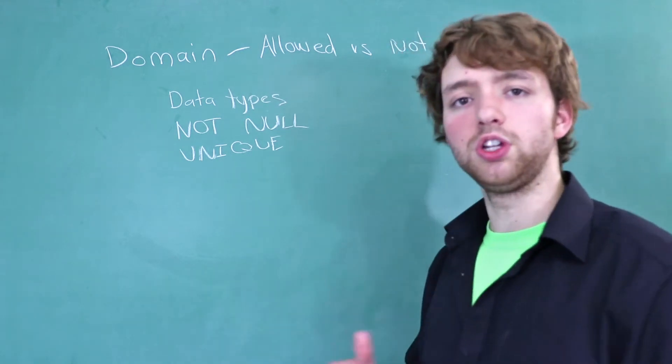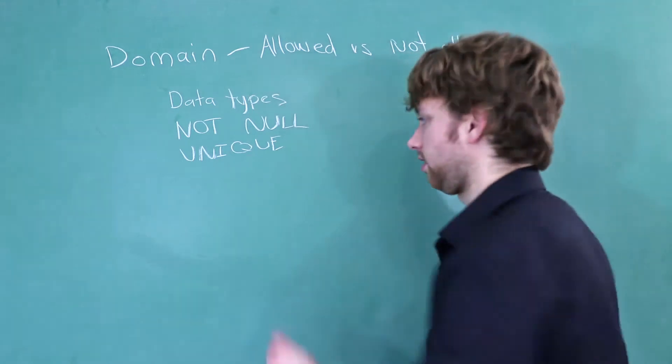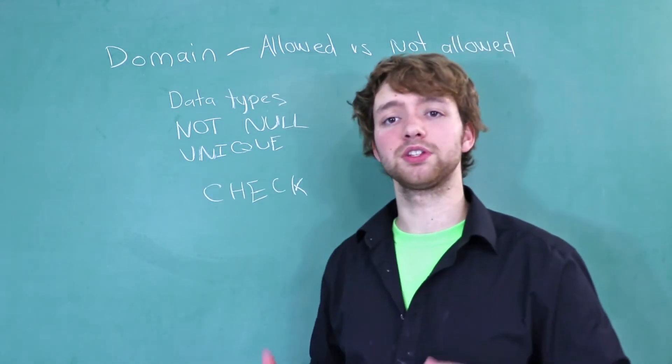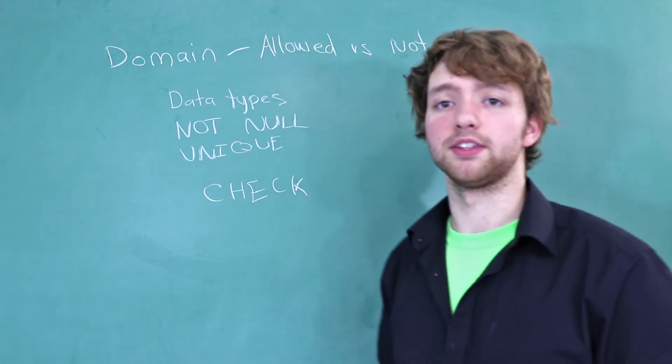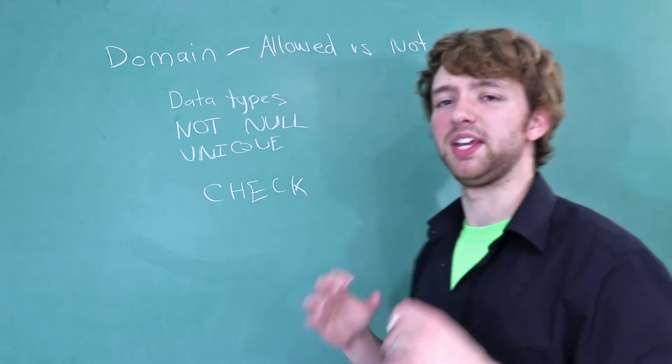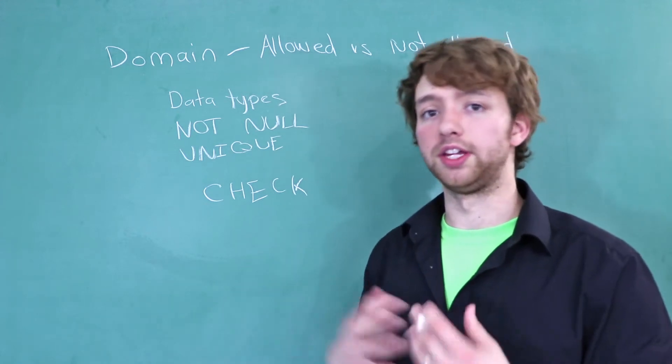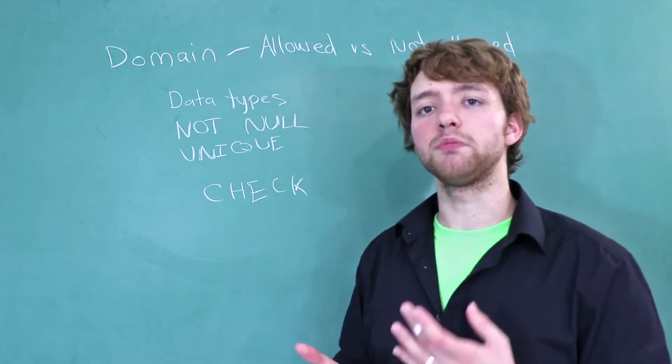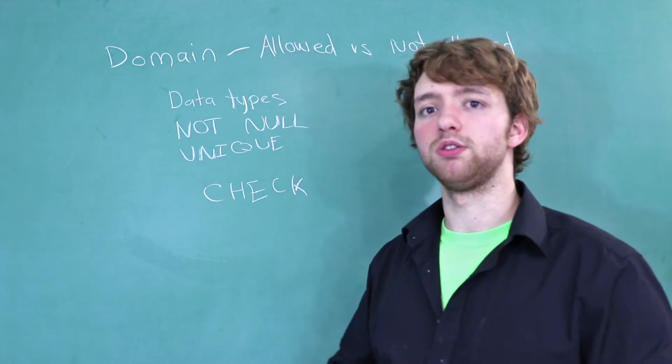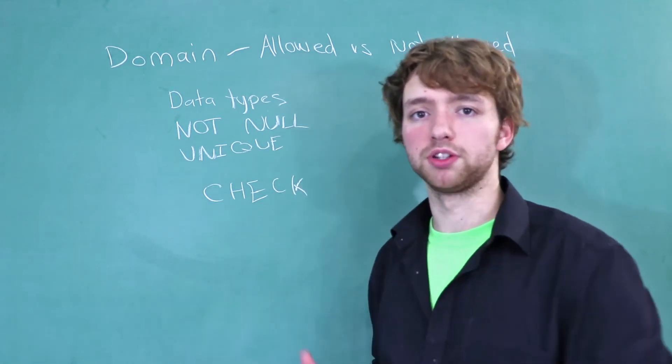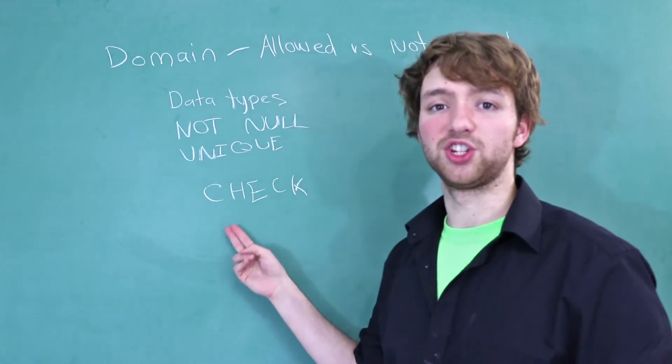Now additionally, you can use what's known as a check constraint. So check constraints are pretty awesome and they're not available in all database systems. So I'm pretty psyched that DB2 has them. But check constraints allow us to be extremely, extremely specific on what data is allowed inside of our column. So if you want to be specific on, we can only use values in this range or only these specific options, well then you might want to look into a check constraint.